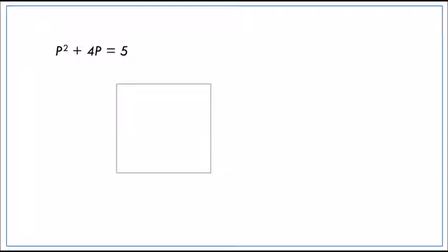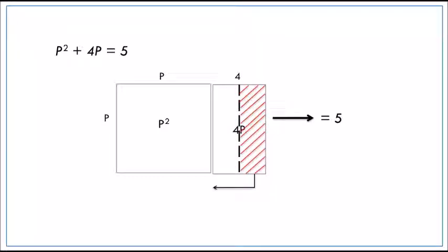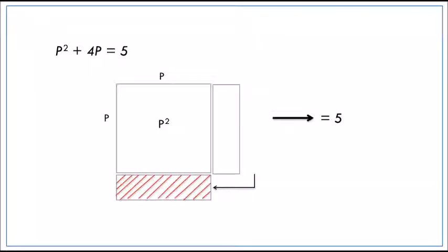And we can get p squared plus 4p equal to 5 and 2 boxes of p squared and 4p as the area of the total is 5. So the second box will be divided into 2 and transferred to the bottom left, leaving them with p squared and 2p and another 2p with equivalent to 5.